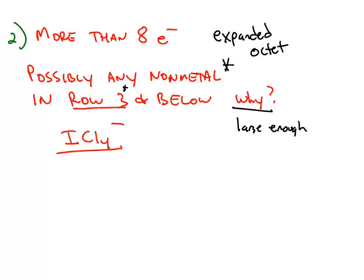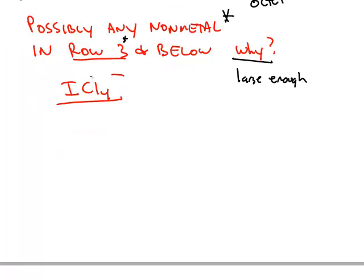So when we draw the Lewis structure for ICl4- with the negative one charge, we're going to start by putting the iodine in the center, four chlorines on the outside.